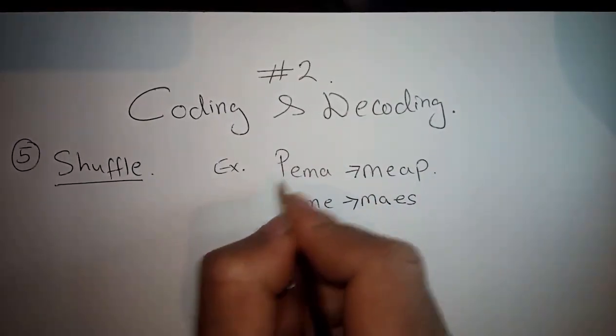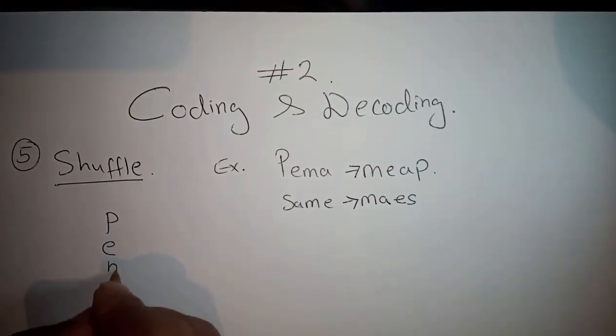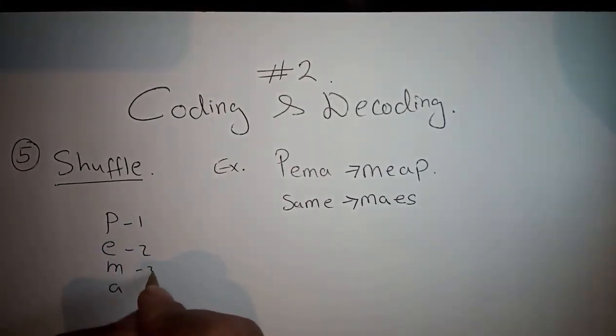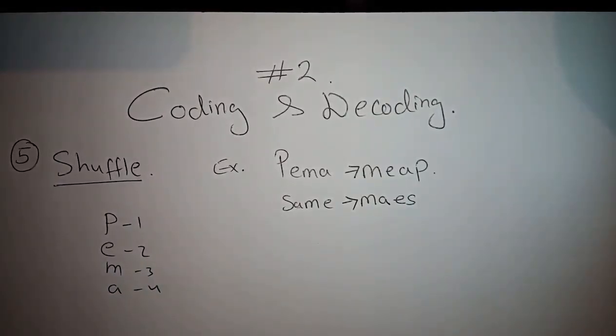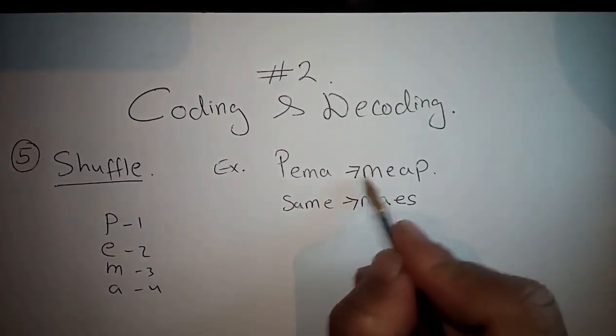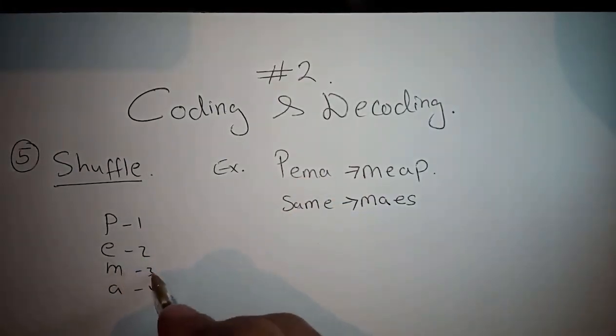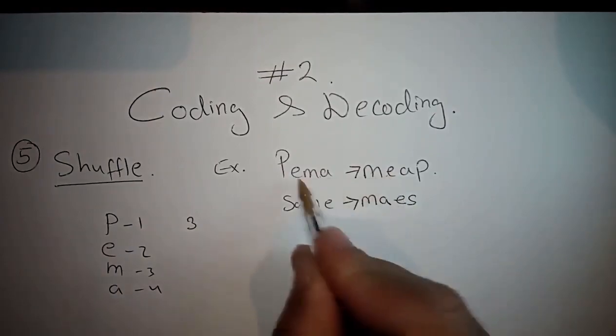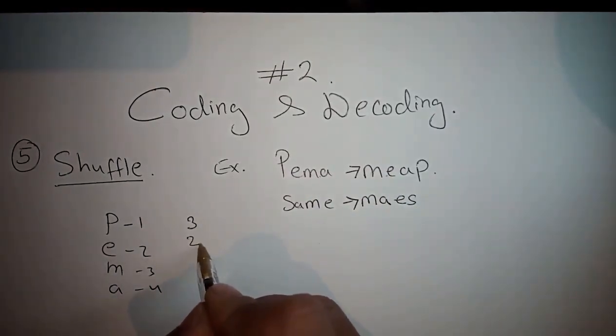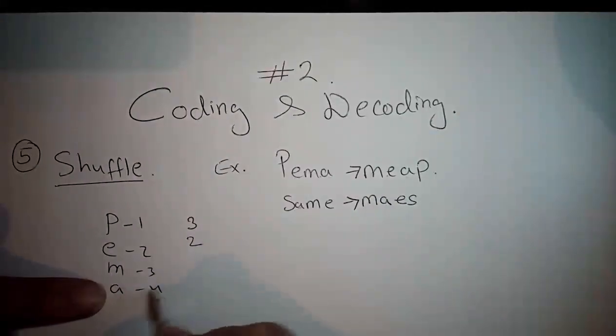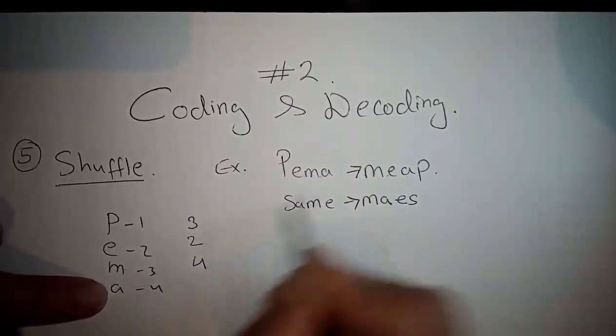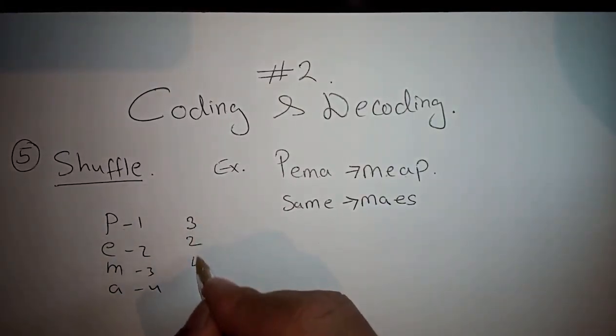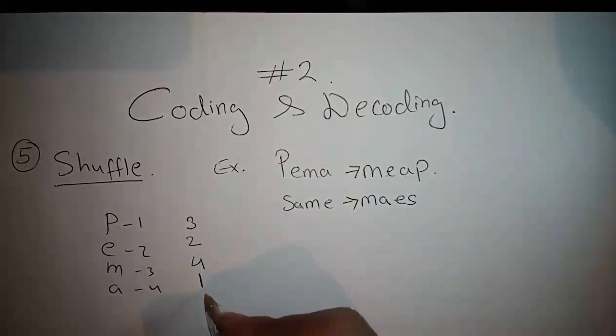Simple thing - payment has letters P, E, M, A. One, two, three, four. They have shuffled it as three, two, four, one. So M is three, E is number two, A is number four, P is one. They've shuffled in the pattern three, two, four, one.